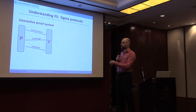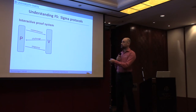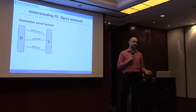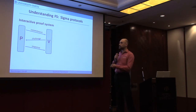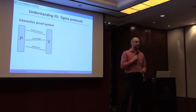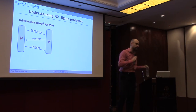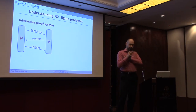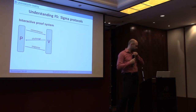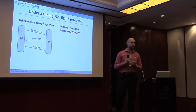We start with an interactive proof system where the prover knows the proof of a statement and wants to convince the verifier. We consider proof systems of a very specific form — so-called sigma protocols. These are proof systems which have exactly three messages called the commitment, the challenge, and the response. We have the added property that the challenge — the message from the verifier — is a uniformly random message.